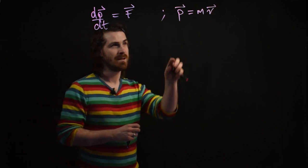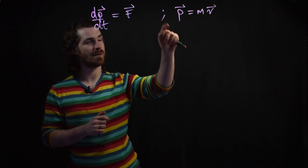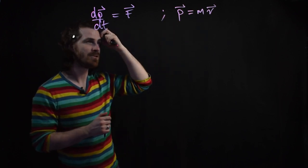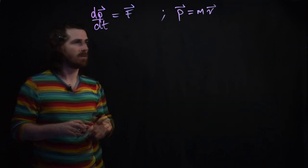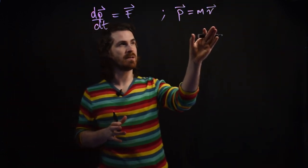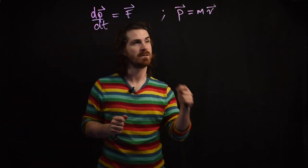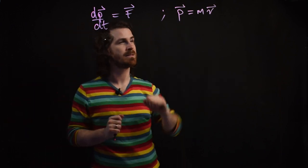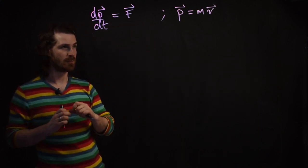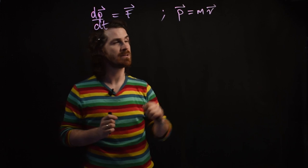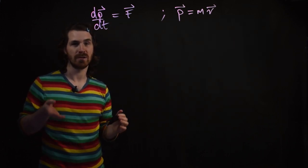As v approaches the speed of light, this needs adjusting. It turns out that in special relativity, for this to be true, we need to adjust something — and that something is the mass. It turns out we'll find that as an object goes faster, its mass changes. And to do that, we look at the collisions of two particles.